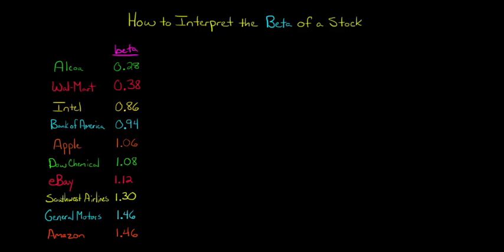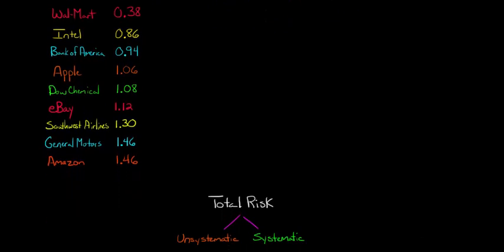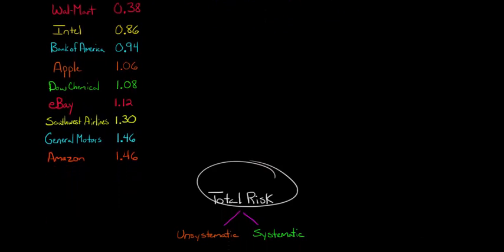And so just a quick review of what beta is: when we think about the risk of a firm's stock, we think about unsystematic firm-specific risk, which can be diversified away, and then we think about systematic risk that's related to the market as a whole and cannot be diversified away.